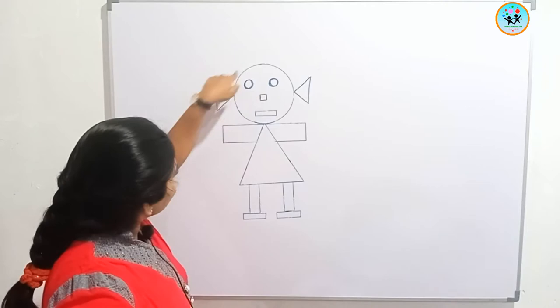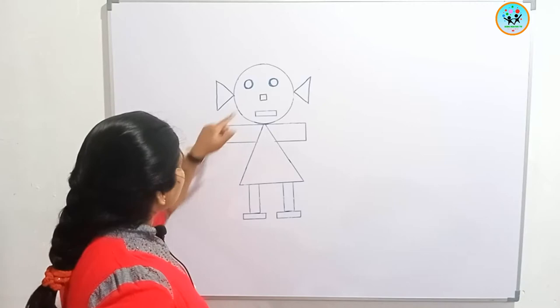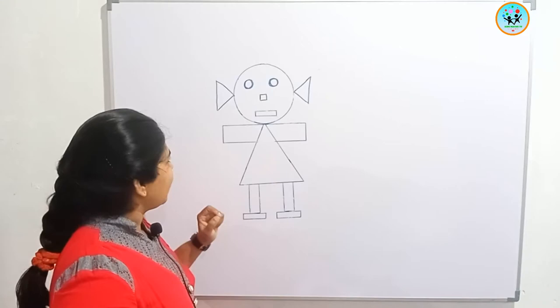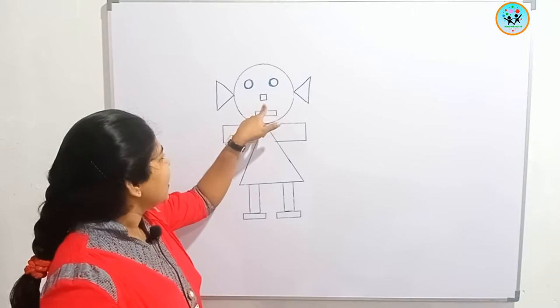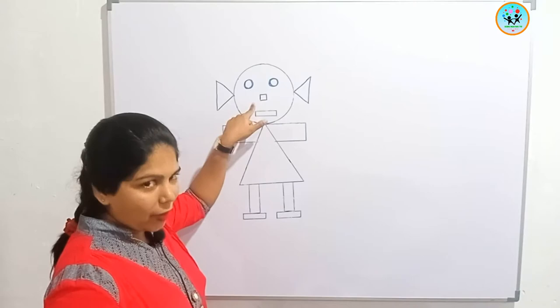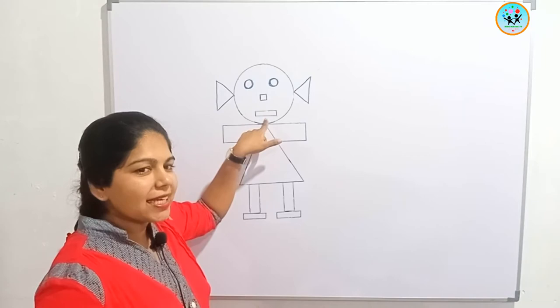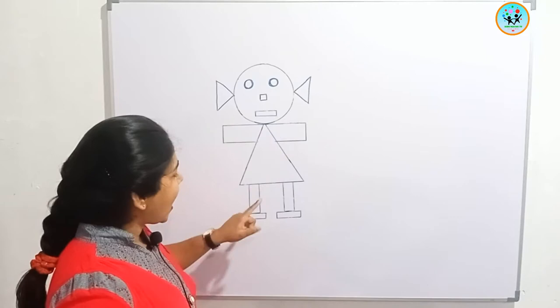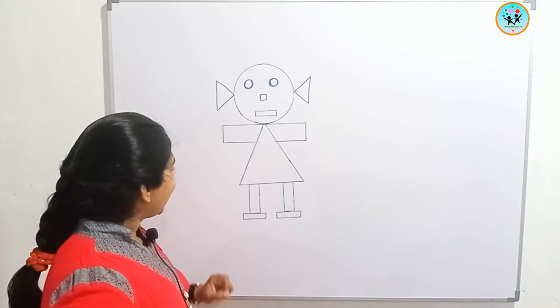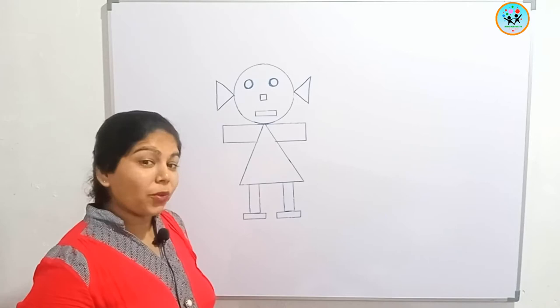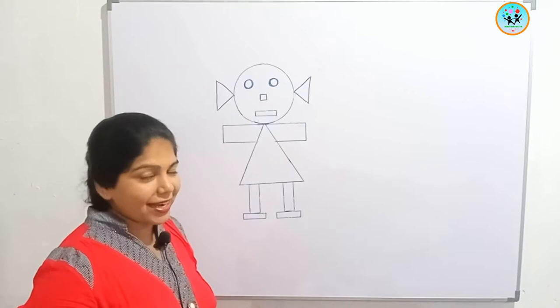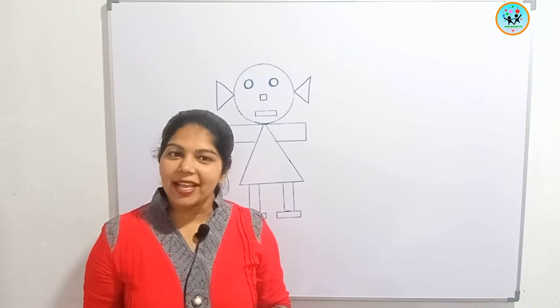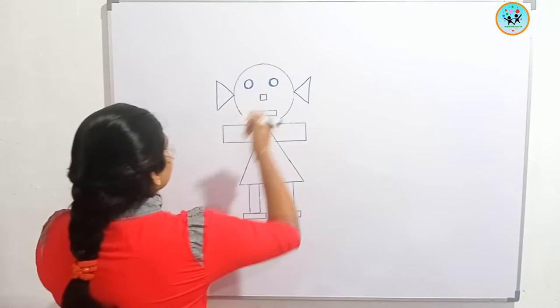The face of the girl is like a circle. Two eyes — they are like circles. Can you guess what is this? Yes, it's a nose — it's like a square. This is the mouth — it's like a rectangle. Two hands and two legs like rectangles, the body is like a triangle, and two ears also like triangles. Can you guess what the topic is today? It is shapes!